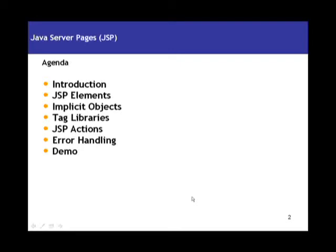This is the agenda for our session. We will start off with some introduction where we will see what a JSP is and where it fits in the MVC architecture, and some of the building blocks of JSPs. Then we will see what the different JSP elements are and how to use them. Then implicit objects — what they are, their scope, and what they are used for. Tag libraries is one of the important concepts in JSPs; we will see how to use them and how to build your own tag libraries. We will also cover JSP actions, error handling, and in the end we will have a demo.